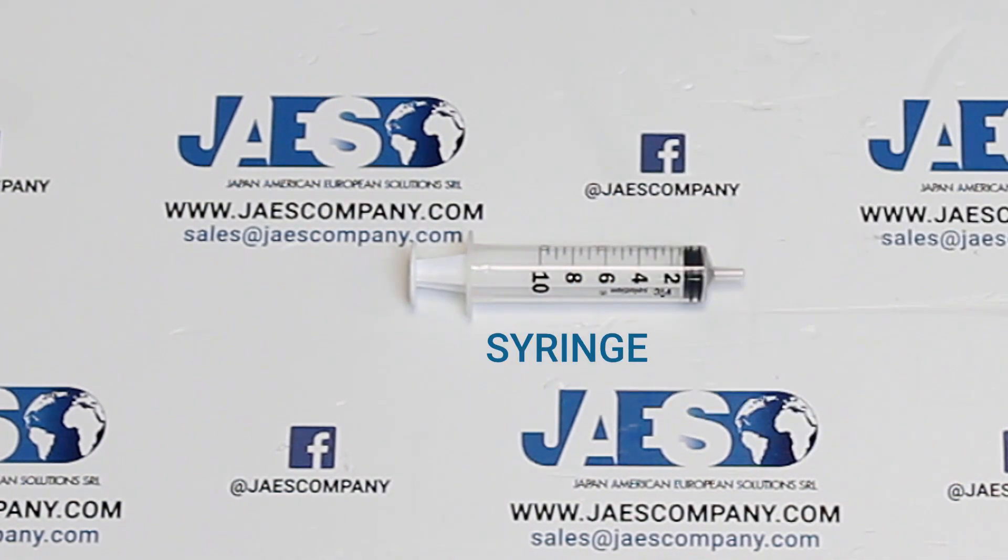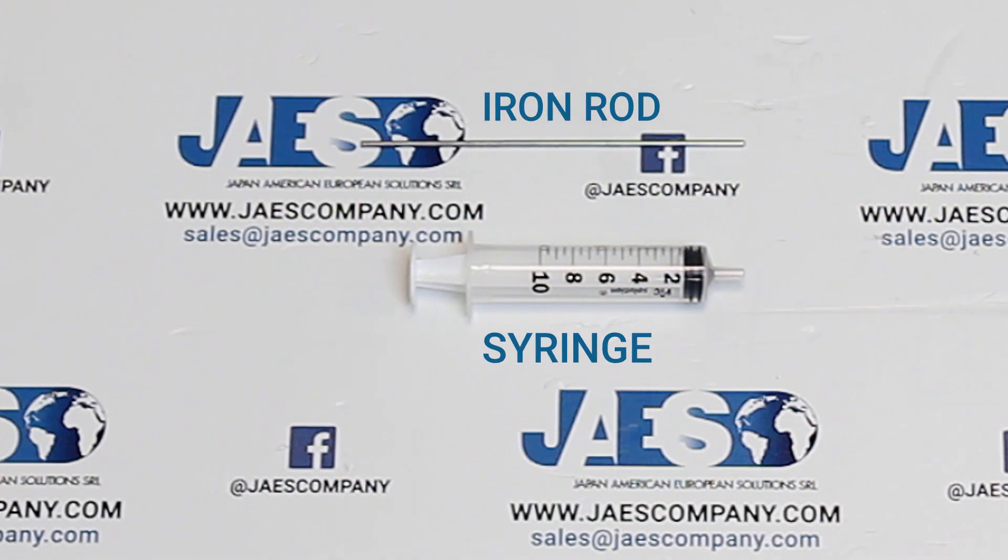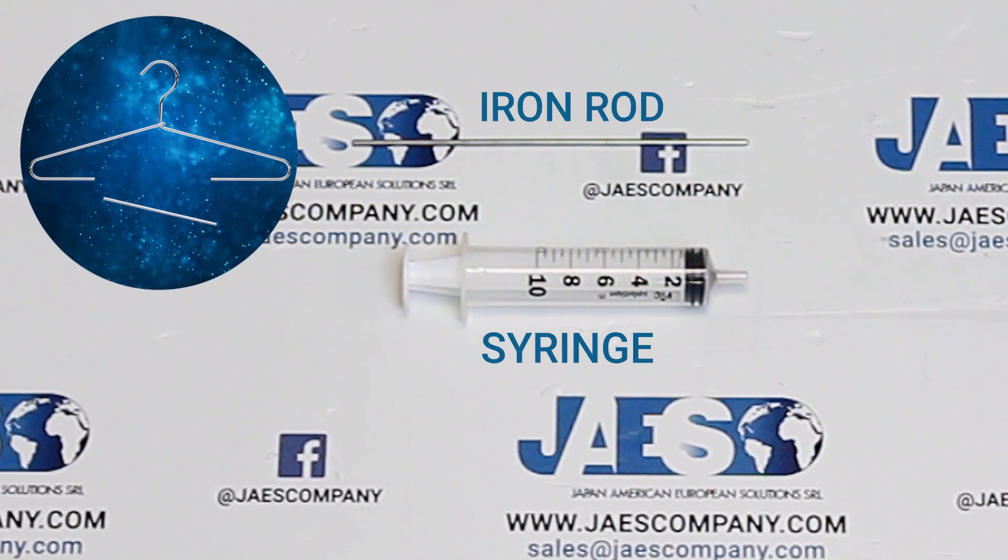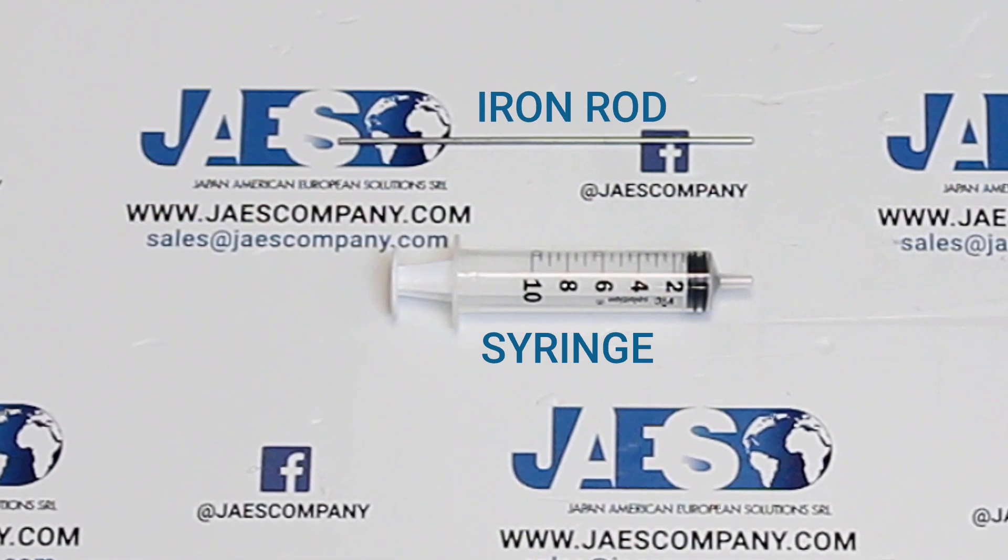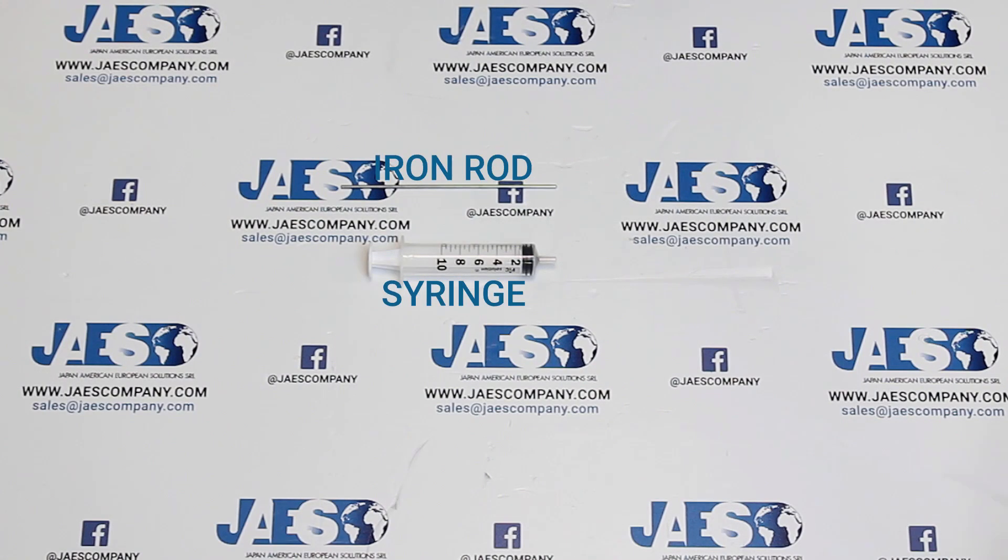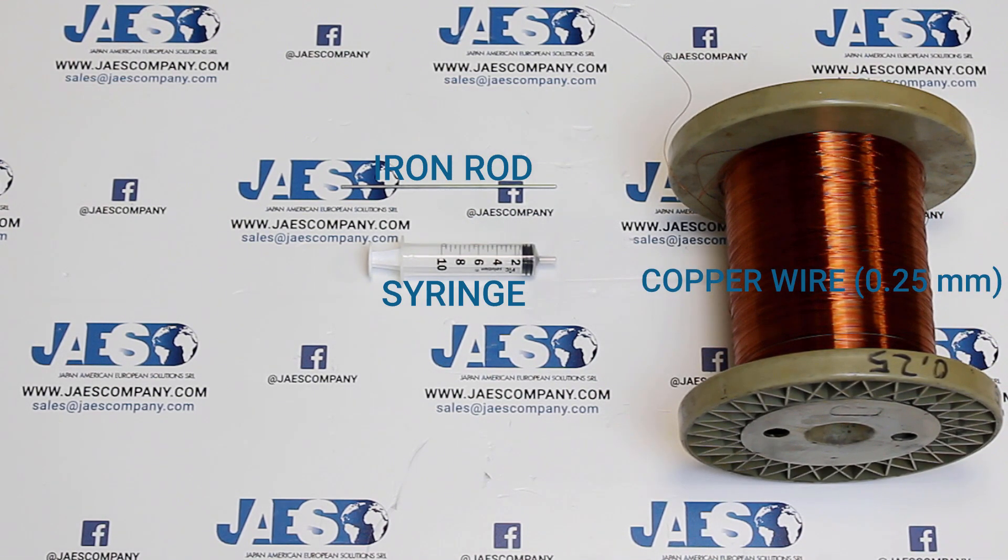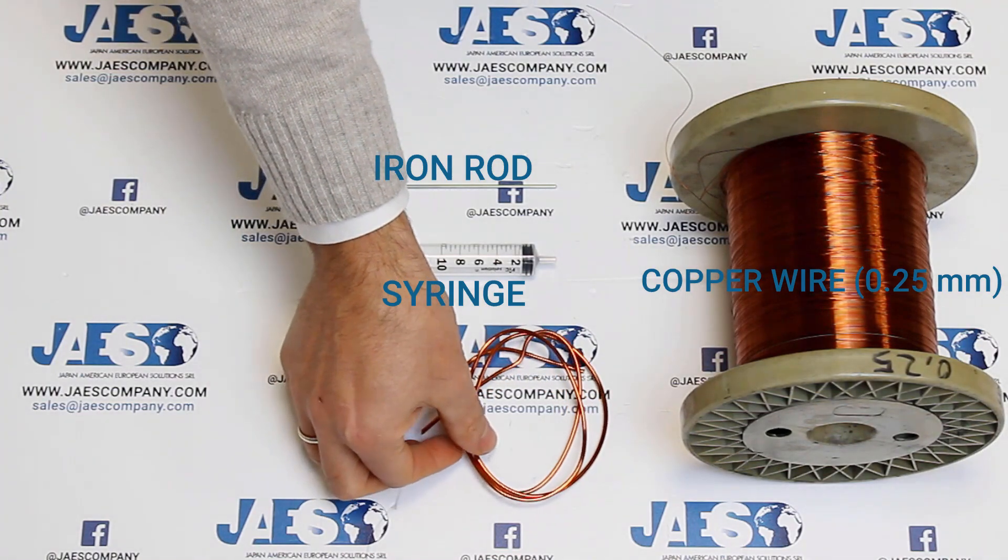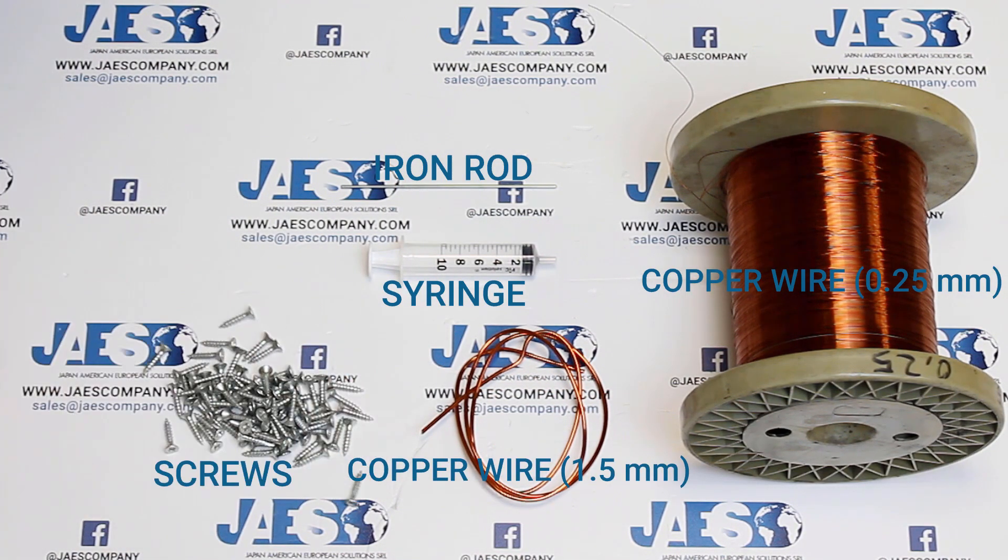Such as a syringe, an iron rod which we had previously cut from an old clothes hanger, 0.25 mm copper wire, 1.5 mm copper wire, and 2.5 mm copper wire.